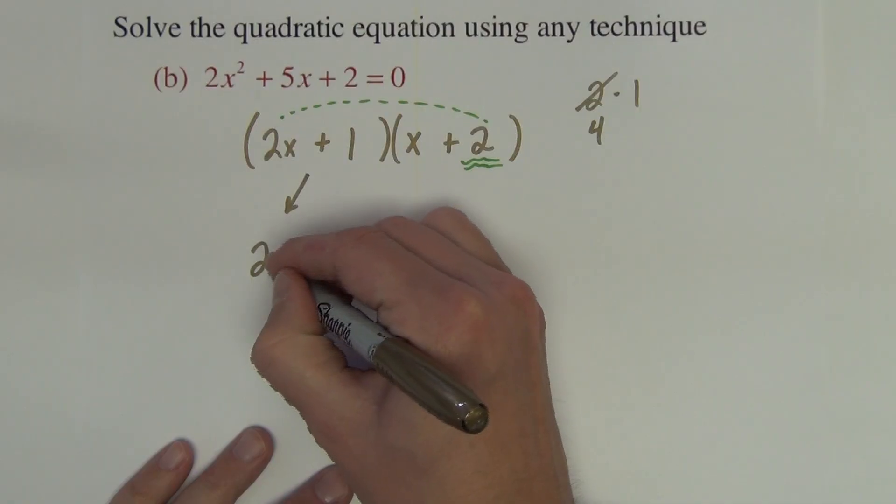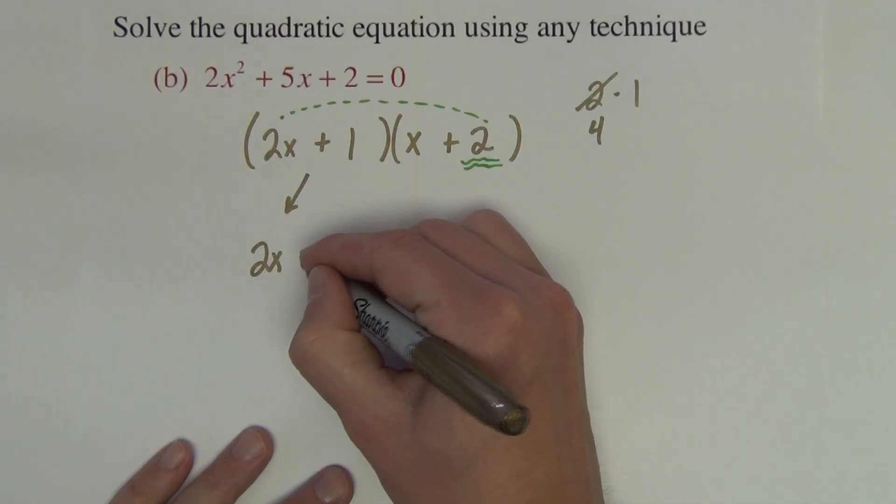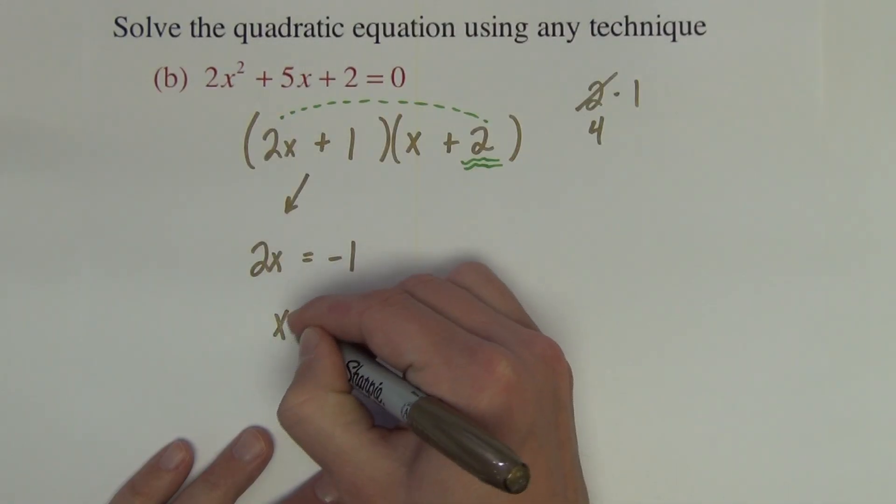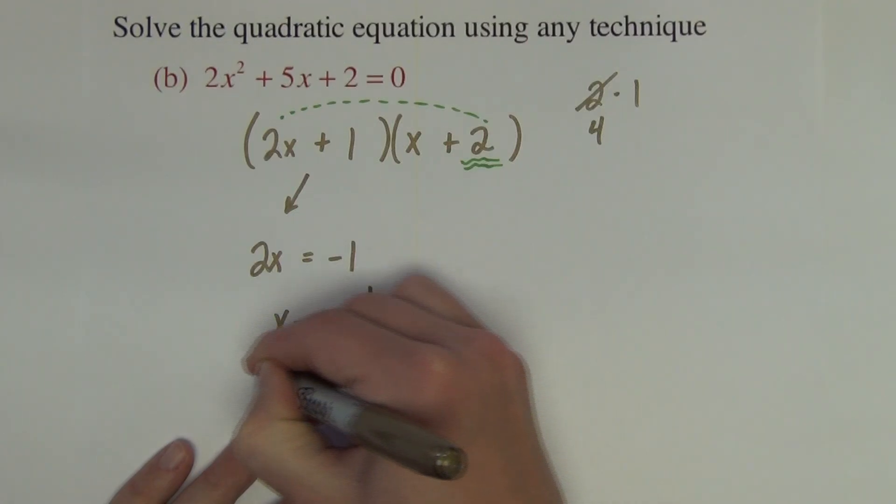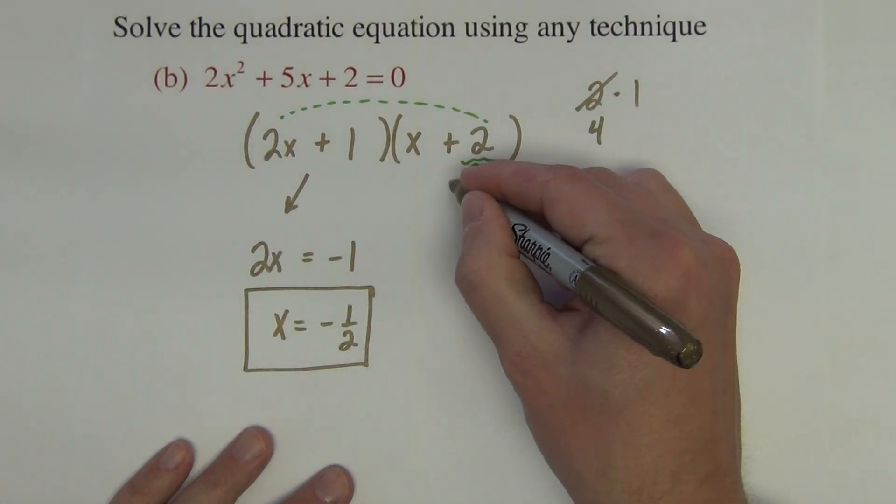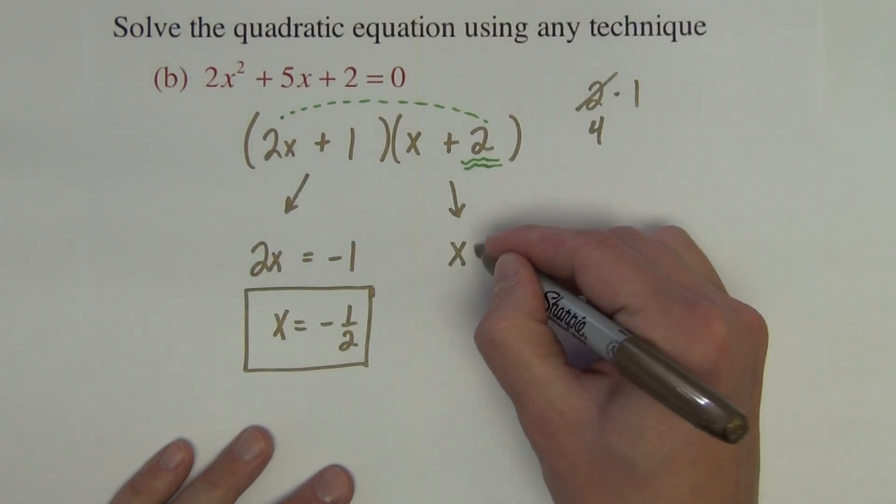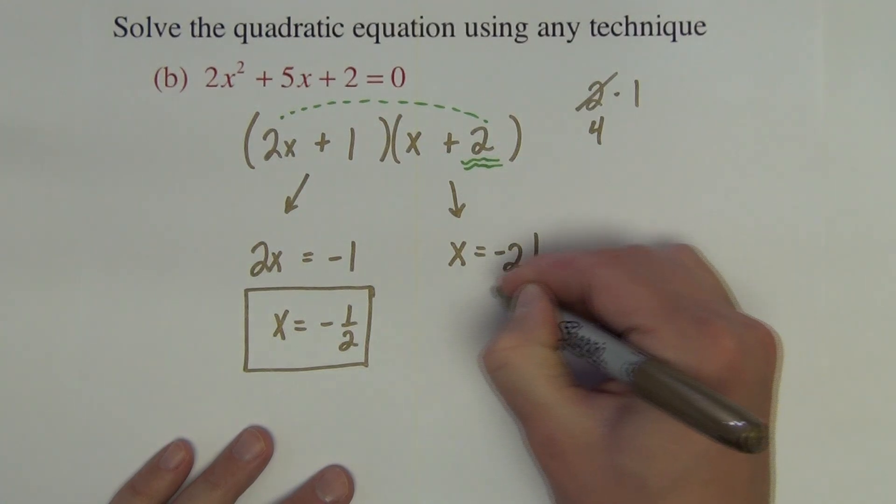This one, solve for x, I get 2x equals negative 1. So x equals the fraction negative 1 half. This one, we subtract the 2, get x equals negative 2.